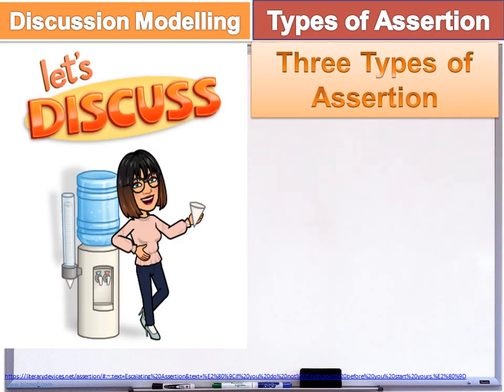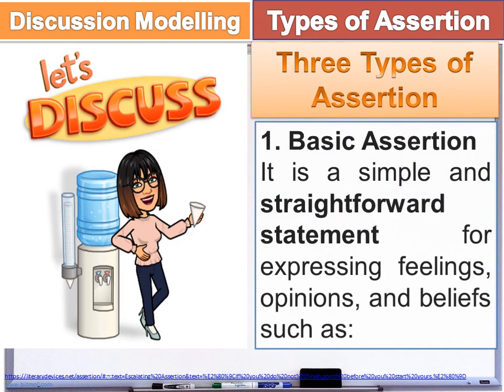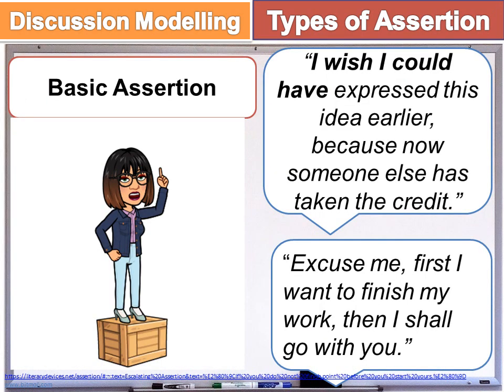There are three types of assertion. Number one: Basic Assertion. It is a simple and straightforward statement for expressing feelings, opinions, and beliefs. Such as: 'I wish I could have expressed this idea earlier because now someone else has taken the credit.'